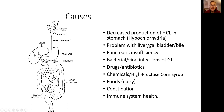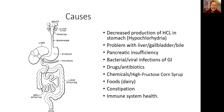Finally, immune system health is listed last because the immune system usually becomes unhealthy as a secondary problem. Something stimulates the immune system — it becomes overstimulated, overreactive, or understimulated. So immune dysfunction is typically a downstream consequence, not a primary cause.